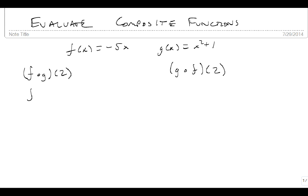So f composed with g of 2 is the same thing as f of g of 2, which is f of, well g of 2 is 2 squared plus 1, so 4 plus 1, which is 5. So I'm going to do f of 5.